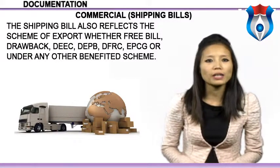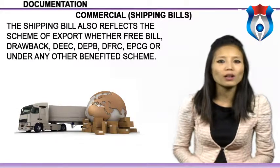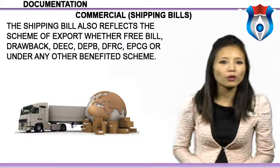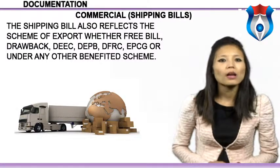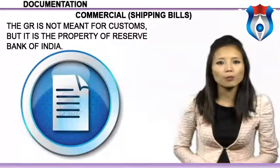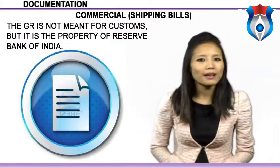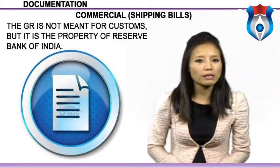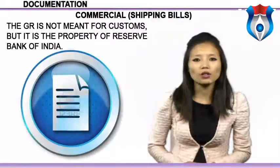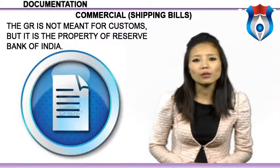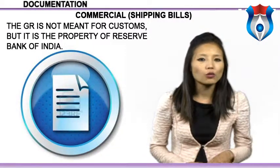After introduction of the electronic data interchange (EDI) facility, manual hard copy GR procedures have been discontinued, as a copy of the GR is directly transmitted from the customs department to the Reserve Bank. However, GR procedures are continued at customs locations where no electronic filing arrangements are available. The GR is not meant for customs but is the property of the Reserve Bank of India. In export trade, inward remittance from foreign countries is affected, and in import trade, money is transferred from the importing country to a foreign country. For the economic stability of a country, all inward and outward movements of money must be monitored, and the Reserve Bank is the government agency responsible for this — which is why the Reserve Bank monitors GR on each export.